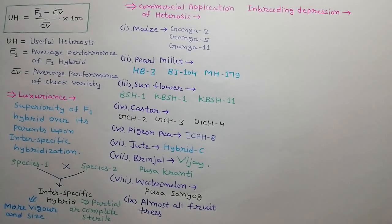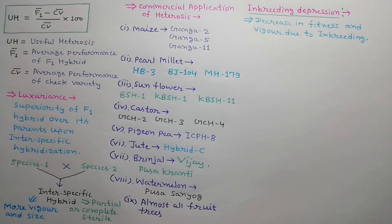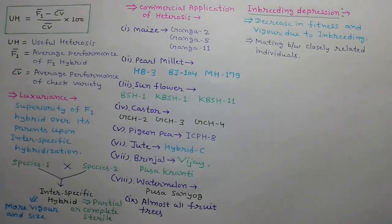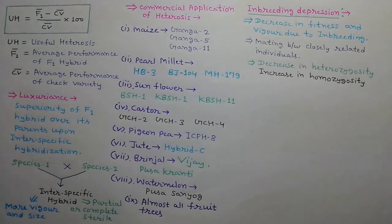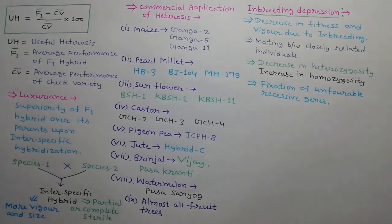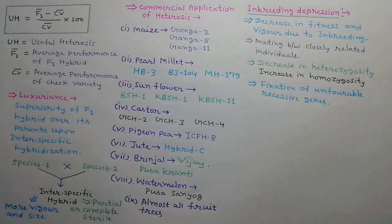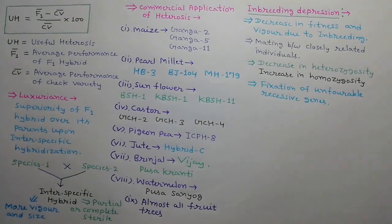Next, we will discuss inbreeding depression. Inbreeding depression refers to the decrease in fitness and vigour due to inbreeding. It results from mating between closely related individuals. It is due to a decrease in heterozygosity and an increase in homozygosity. It is due to the fixation of unfavorable recessive genes.